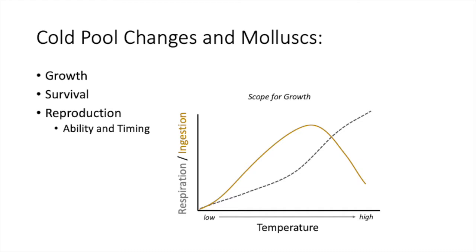I'm going to talk about implications of potential changes in the cold pool for mollusks in the context of growth, survival, and reproduction. Touching back to Grace's concept of scope for growth: mollusks don't thermoregulate — their body temperature reflects the water they're in. As temperature increases from low to high, their respiration increases; they need more and more energy. Their ingestion — their ability to feed — goes up with temperature to a point and then drops off. That optimum difference between these two lines is the thermal optimum. When you get out past that break point, they may compensate for a time with internal resources, but if they stay there too long, they'll die.